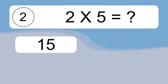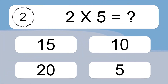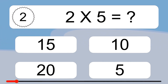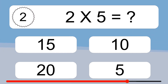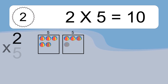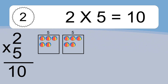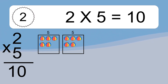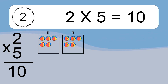2 times 5 equals what? 2 times 5 equals 10. We have 2 boxes, and each box has 5 colorful balls inside. If you count all the balls in all the boxes together, you will have 2 times 5 balls.